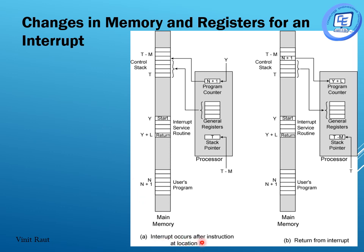Consider that an interrupt occurs after an instruction at location N. In the main memory, if you look at the diagram, there is a user program. N is the address of the currently executing instruction, and N+1 is the next instruction address to be executed. There is a control stack, currently pointing to T. After loading the data, it will point to T minus M. The control stack is currently empty and pointing to address T.